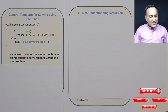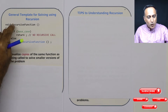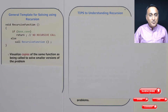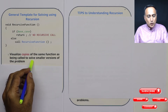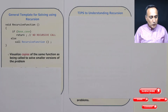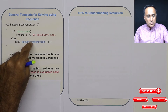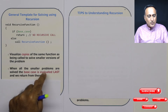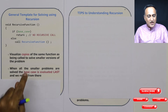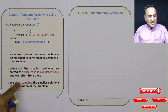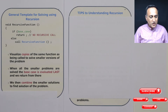The best way to understand recursion is don't think of this function being called repeatedly. Think of or visualize as though there are multiple copies of this recursive function running in parallel at the same time to solve smaller parts or smaller versions of the problem. When all the smaller problems are solved, then we hit the base case. From the base case, we start joining, adding, or merging the solutions to find the solution to the complete problem. Once we return from the base case, we combine all these solutions to form the solution to the complete problem.